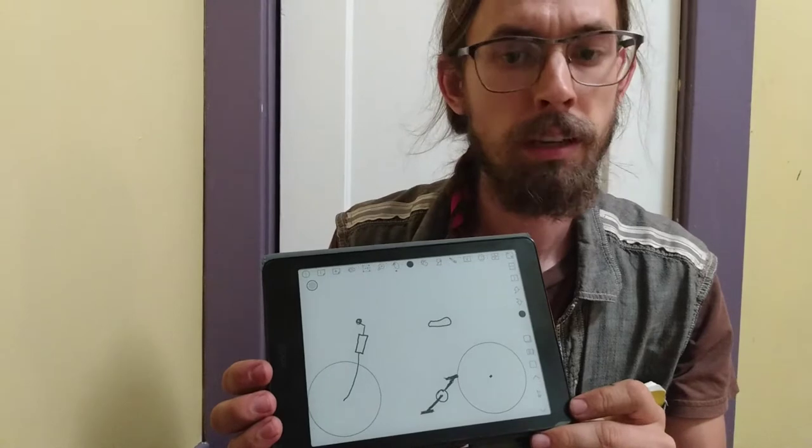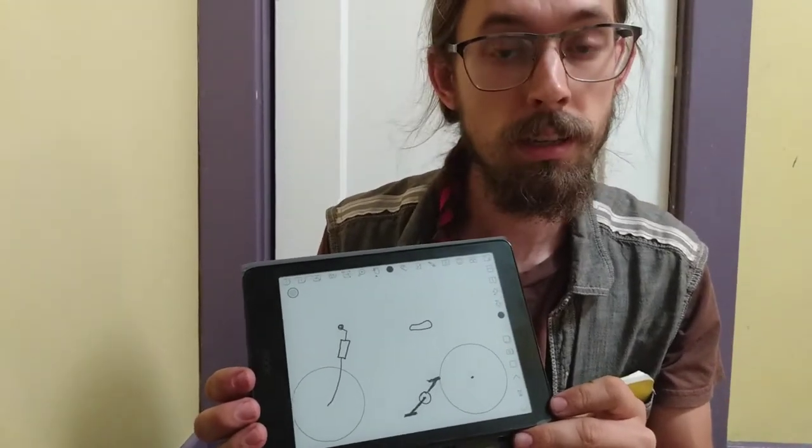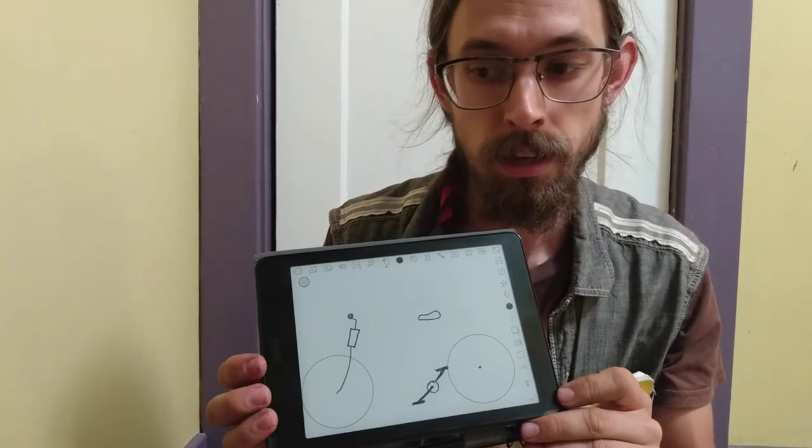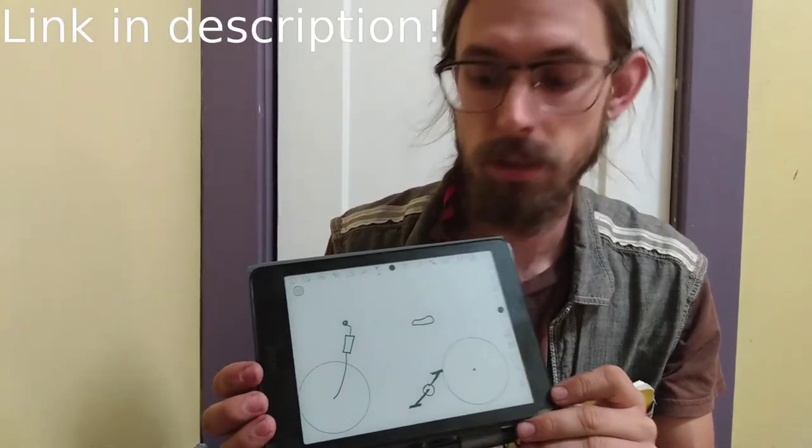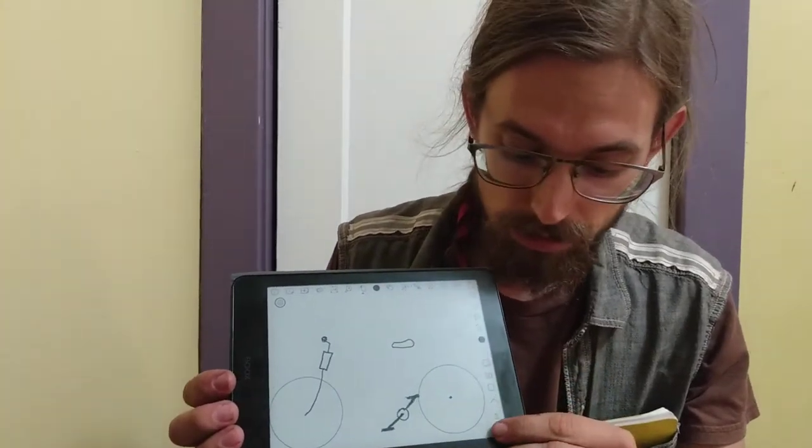You could fill that middle area in with whatever you want so long as it connects all the pieces. If you want to see an interesting historical design, take a look at the Peterson bicycles. They're quite different. Anyway, back to tensegrity.